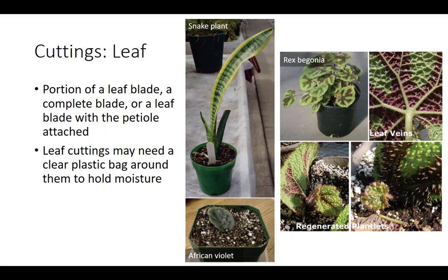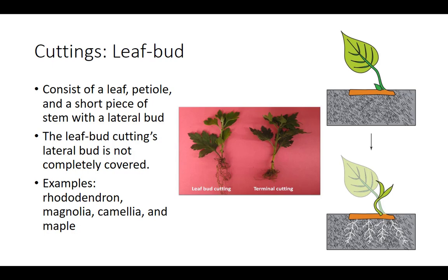Leaf bud cuttings consist of a leaf petiole and a short piece of stem with a lateral bud. This type of propagation is very important when woody plant material is scarce and a large number of new plants are required. Leaf bud cuttings are taken from plants with fully developed buds and actively growing leaves. Typically, leaf bud cuttings must be treated with a rooting hormone prior to placement in the rooting medium. The lateral bud should not be completely covered because the bud will remain too moist and rot. To ensure success, the cuttings should be placed under high humidity and supplied with bottom heat. Examples of popular species propagated by leaf bud cuttings are rhododendron, magnolia, camellia, and maple.